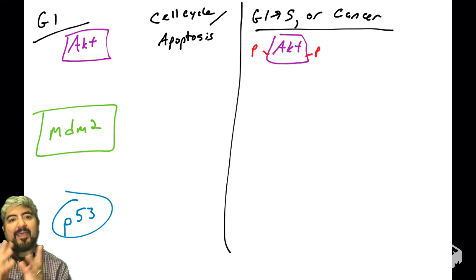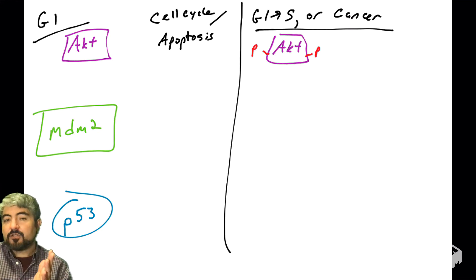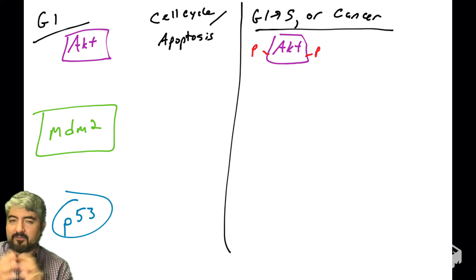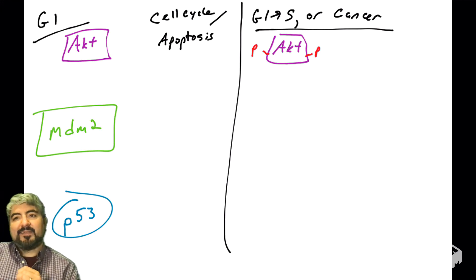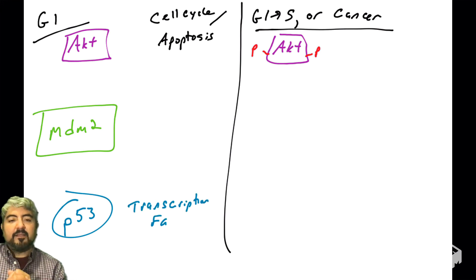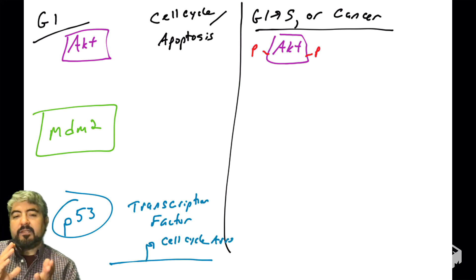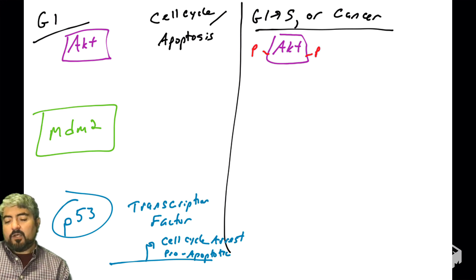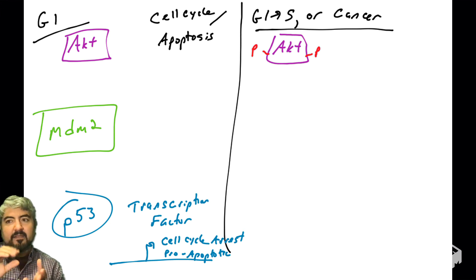Let's talk about how AKT regulates P53. P53 is a major tumor suppressor protein — the guardian of the genome. We're going to talk about P53 later in the course in a whole dedicated unit. P53 is a transcription factor that can turn on cell cycle arrest genes and trigger apoptosis of the cell, detecting many types of cellular stress. AKT can regulate P53 by phosphorylating the regulator of P53 called MDM2.